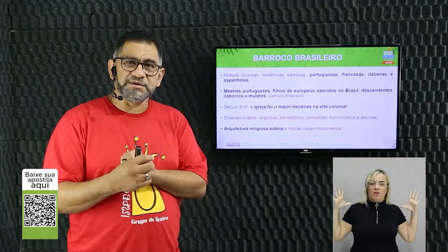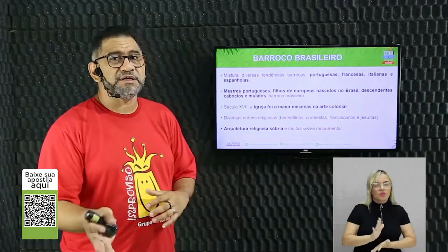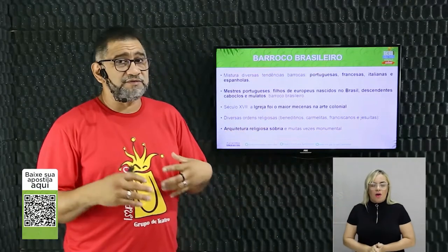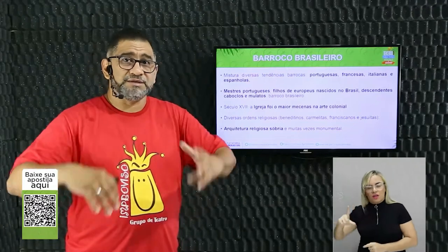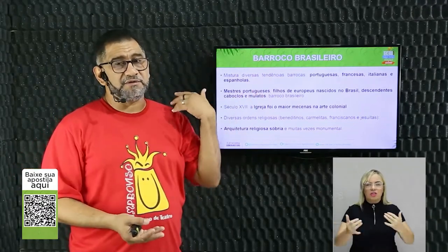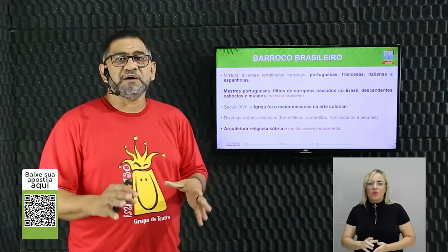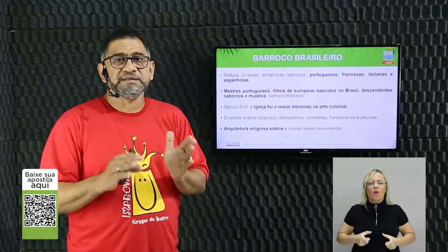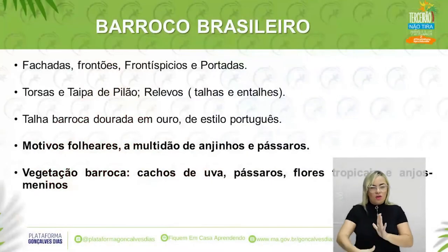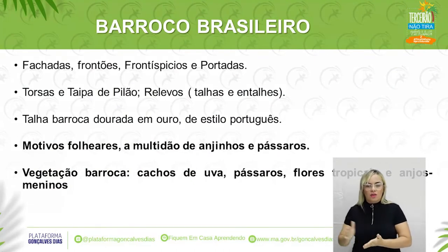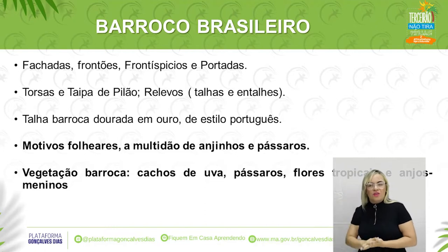Os anjos são talvez a característica mais marcante do barroco brasileiro. A arquitetura religiosa é sóbria e muitas vezes monumental — feita para chamar a atenção. O local com maior influência do barroco brasileiro é Minas Gerais, especificamente em Ouro Preto, originalmente chamada de Vila Rica. Os elementos técnicos que marcam o barroco brasileiro são: fachadas, frontões, frontispícios e portadas.